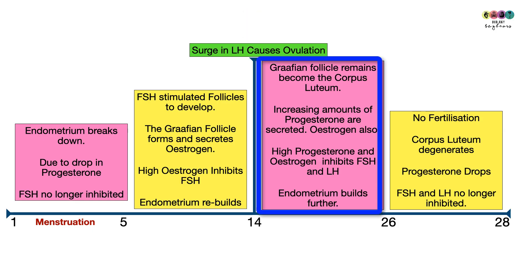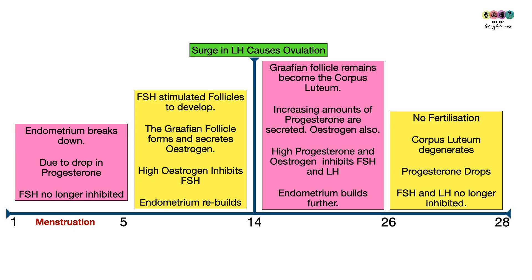After ovulation, what remains of the Graafian follicle becomes the corpus luteum, which produces increasing amounts of progesterone and also estrogen. High progesterone and estrogen levels inhibit Follicle Stimulating Hormone and Luteinizing Hormone, and cause the endometrium to build up further. High progesterone means the thickened endometrium is maintained. In the last few days of the cycle, if there is no fertilization, the corpus luteum degenerates and progesterone levels drop.